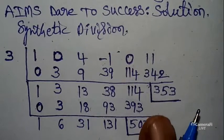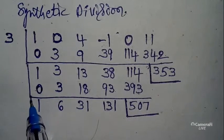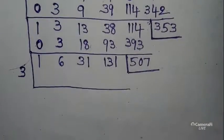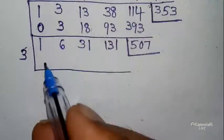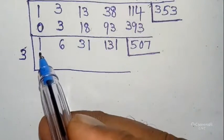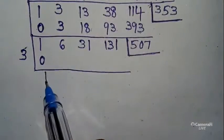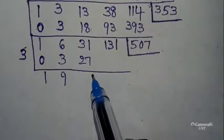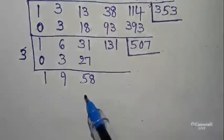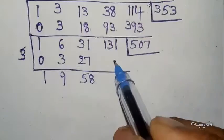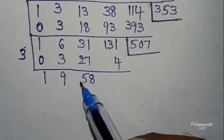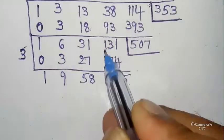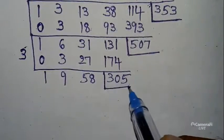Take one more box with the same numbers. First place write 0. Addition: 1 + 0 = 1. 1 × 3 = 3. Addition: 6 + 3 = 9. Cross multiply: 9 × 3 = 27. Next: 1 + 7 = 8, and so on. Cross multiply: 58 × 3 = 174. Then addition gives 305. Keep this value.